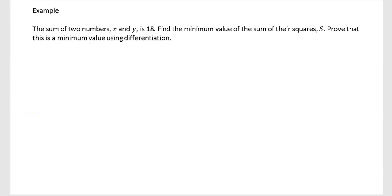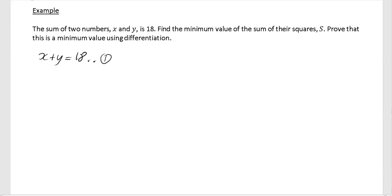This example says: the sum of two numbers x and y is 18. Find the minimum value of the sum of their squares, s. We've got to find some way to connect these two things. The sum means the two things added, so x plus y is equal to 18. We'll call that equation 1.